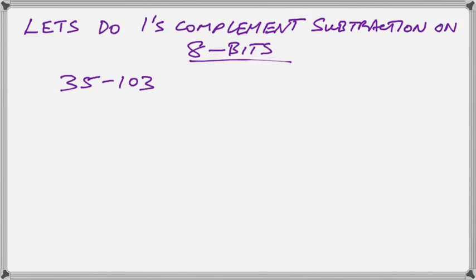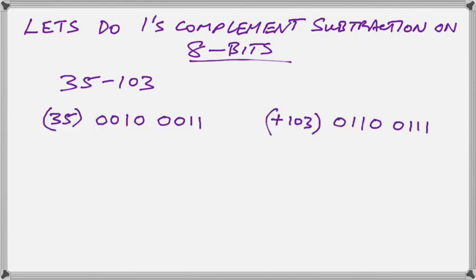Now let's do some 1's complement subtraction on 8 bits. This one has a larger number. We're taking a larger number from a smaller number. We're going to take away 103 from 35. How do we do it? Well, we start the same way. We convert the numbers to binary.